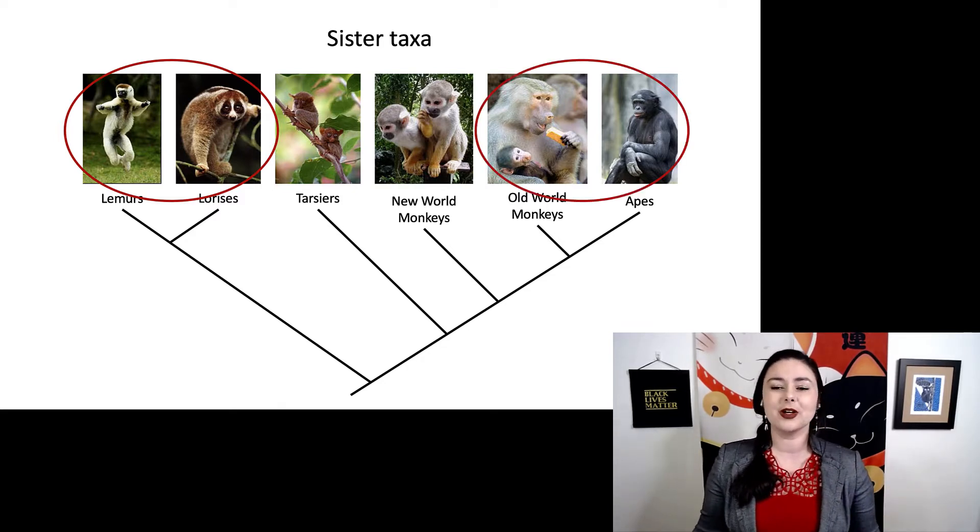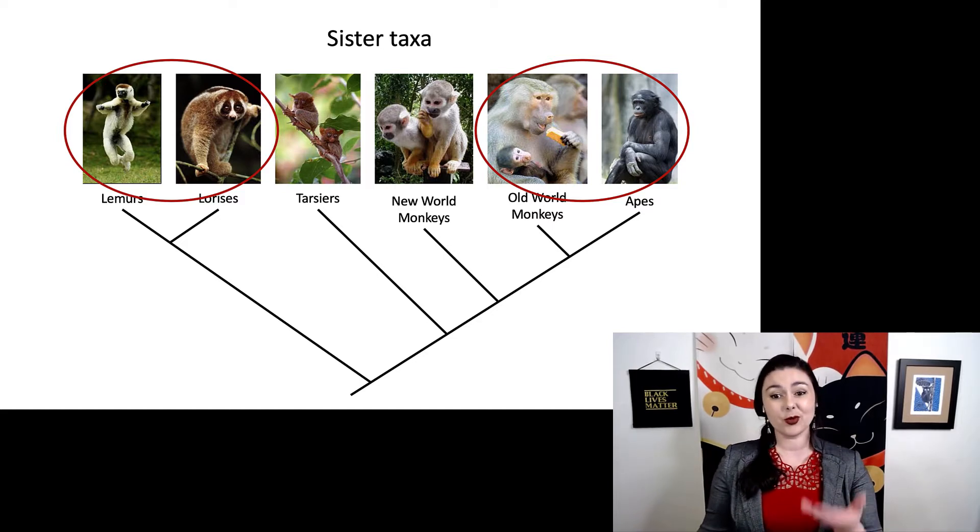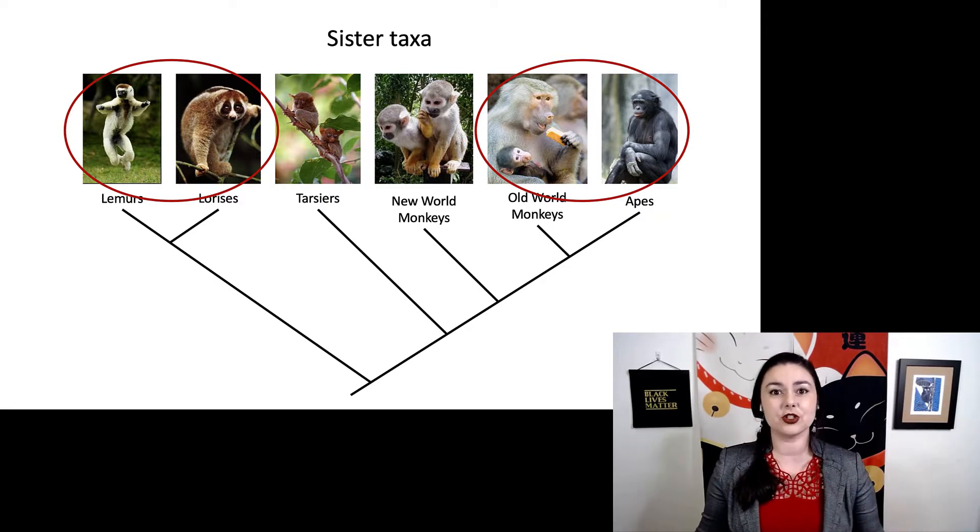Also, old world monkeys and apes are also sister taxa. Remember, what we are considering sister taxa is highly dependent on what type of tree you're using as a reference. Because remember, old world monkeys and apes, well, there's a lot of species in those two groups. So you might call humans and chimpanzees sister taxa because we are more closely related to each other without any other living species coming between us.